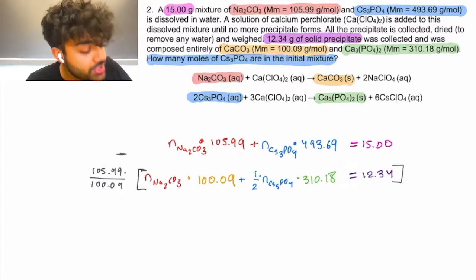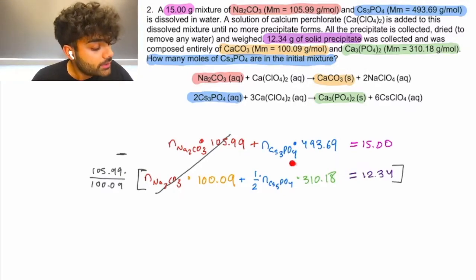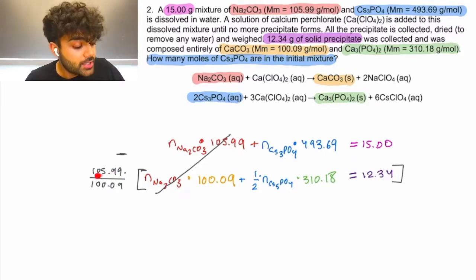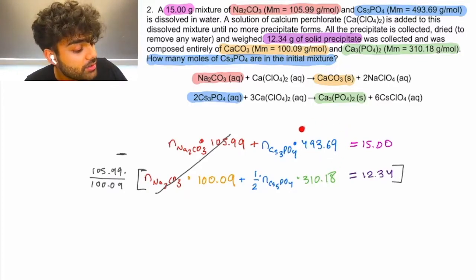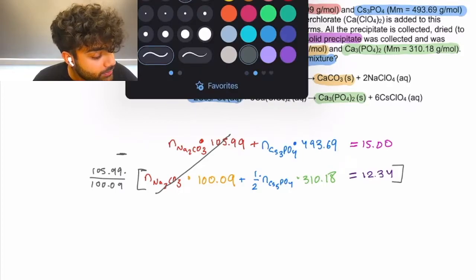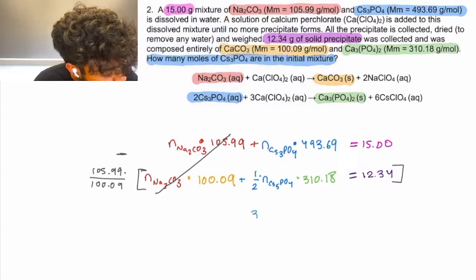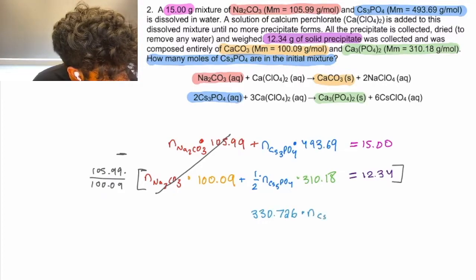Alright, so we can subtract our equations and we can get our net equation. So, this term becomes 105.99 through the math I described earlier. So, these terms actually cancel. Now, here, we're going to multiply 1.5 times 310.18. We'll just plug that into our calculator. We want to divide by 100.09, and then once we do all of that, we're going to multiply by 105.99. And finally, once we've done all of that multiplication, we're going to take our answer and we're going to subtract it from 493.69. So, we do all of our multiplication, and what we'll get here is that we have 330.726, and we have to account for our moles of CS3PO4.